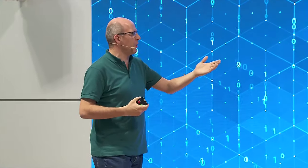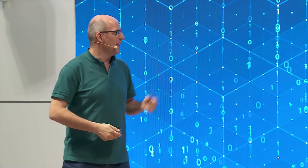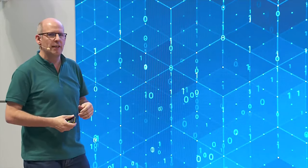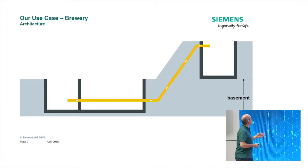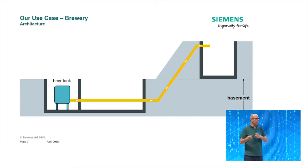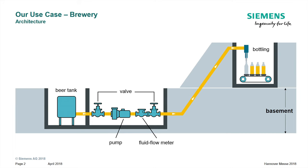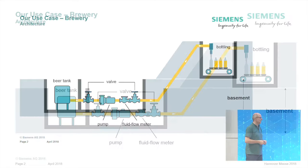Our use case is about beer. We are in Germany, we should talk about beer — and we are not talking about one bottle of beer, we are talking about a whole brewery. Here is our little brewery, a little bit empty at the moment. What is important for the brewery: we need a tank of beer, and we are pumping this beer to the first floor with a pump to our bottling machine, so we want to produce a lot of bottles of beer to sell later.